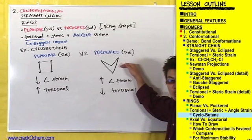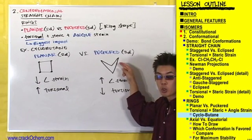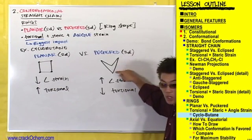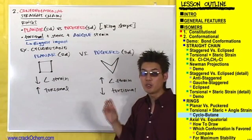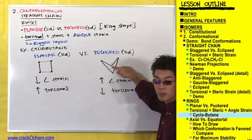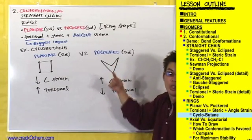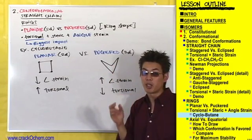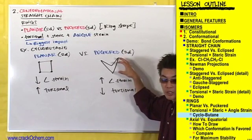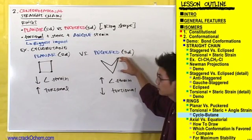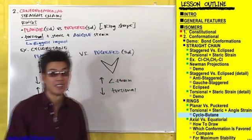I know from this drawing that it looks like puckered should have more torsional strain, because it looks like these carbons are closer together. But you have to imagine this in three dimensions, with this carbon coming out towards you. If you go home and build this with your model set, you'll realize that the bonds are further away from each other in the puckered form than the planar form.